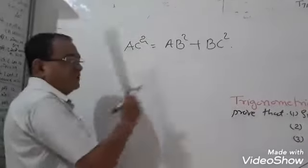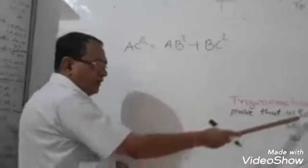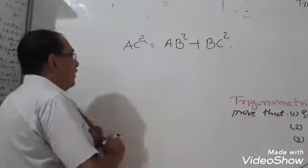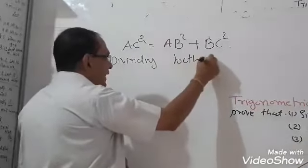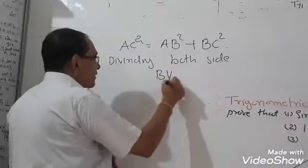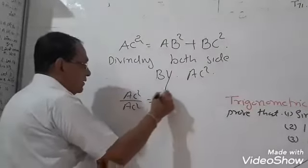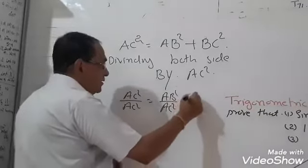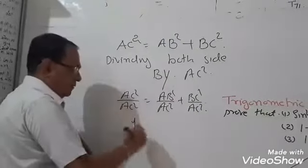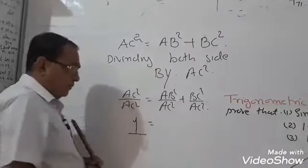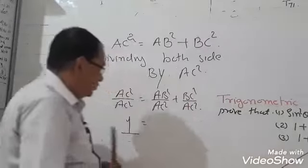Dividing both sides by AC²: AC²/AC² equals AB²/AC² plus BC²/AC². AC²/AC² equals 1. AB/AC is cos θ, so AB²/AC² is cos²θ. BC/AC is sin θ, so BC²/AC² is sin²θ. Therefore, sin²θ plus cos²θ is equal to 1.